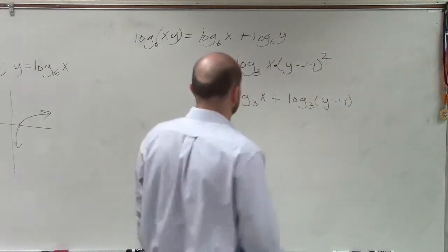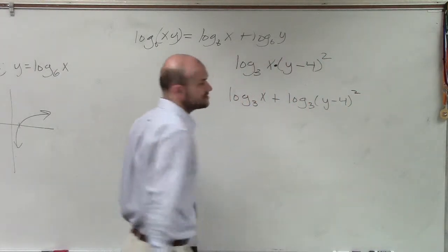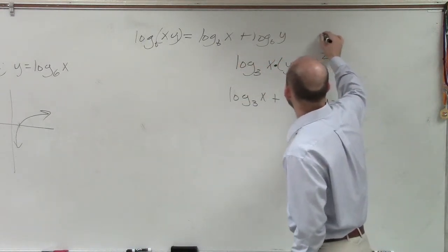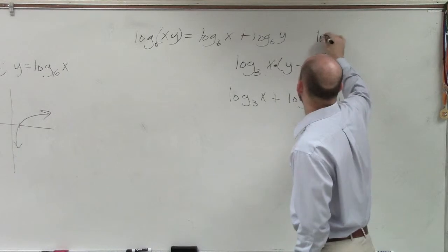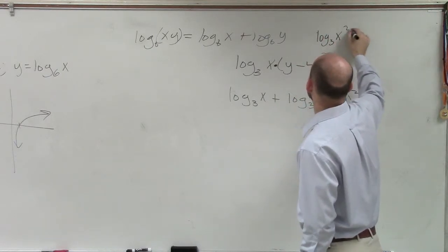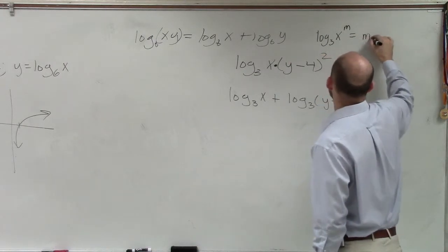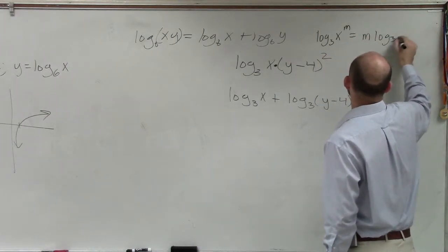And it is squared. The next logarithm property is: if I have log base 3 of x squared, or x to the m, we can rewrite that as m times log base 3 of x.